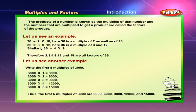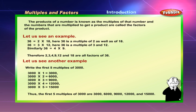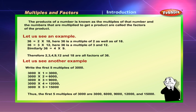Multiples and factors introduction. The products of a number are known as the multiples of that number, and the numbers that are multiplied to get a product are called the factors of the product. For example, 36 equals 2 into 18, so 36 is a multiple of 2 as well as 18.